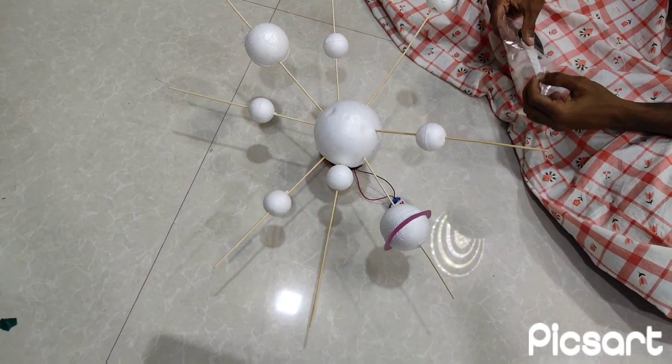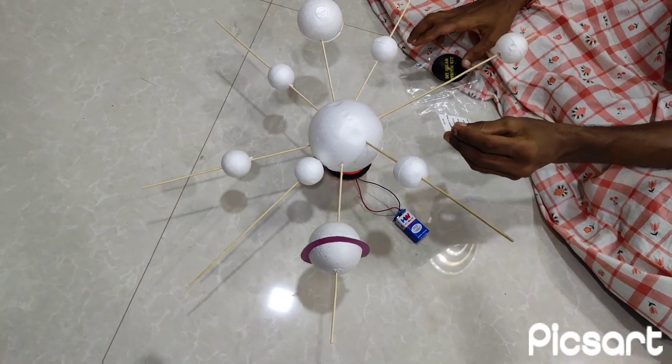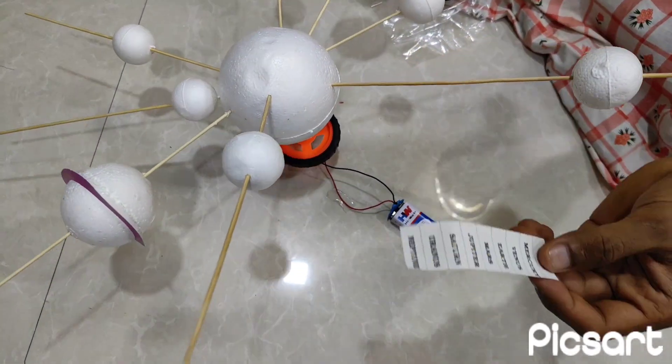Now you can use these stickers to print on the planets. This is the sun, Mercury, Saturn, Venus, Neptune.